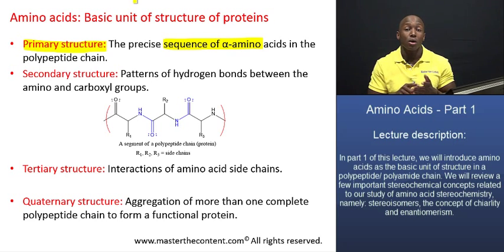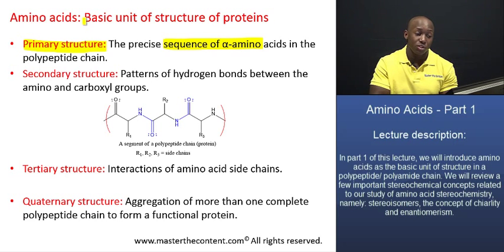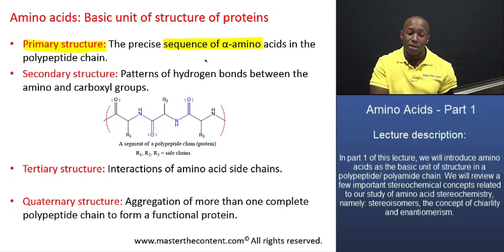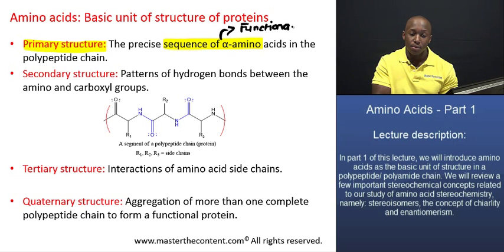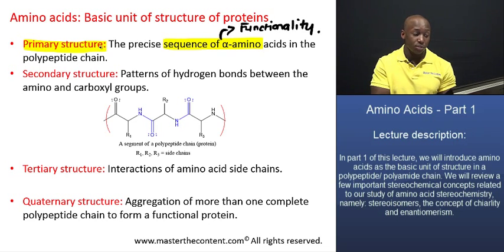A mutation can make the protein do the wrong thing, or make it not work at all. So the primary structure is of fundamental importance because that specific sequence of amino acids is very important to the functionality of the protein as a whole. Primary structure — really important.